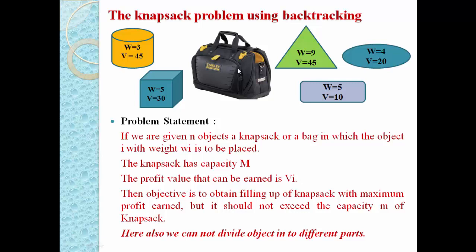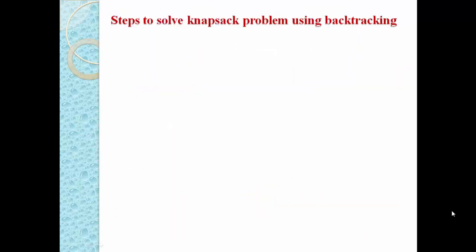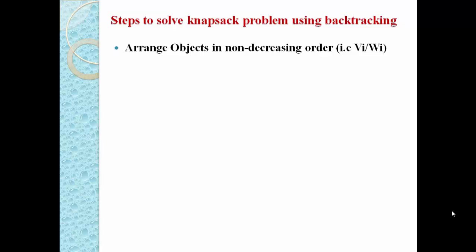In our greedy method we can divide objects into different parts, but in the backtracking approach we cannot divide objects into different parts. So we have objects which cannot be divided. Now let us solve one example using the backtracking concept. As you know, in backtracking we have certain steps to follow. Step one: arrange objects in non-decreasing order of Vi divided by Wi — value divided by weight. This is also the concept used in the greedy approach.